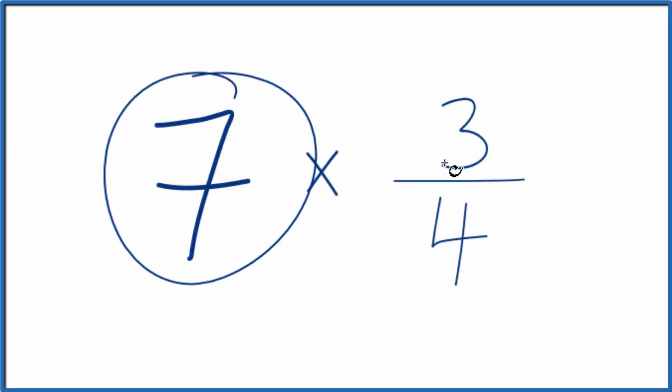Here's how you can multiply 7 times 3 fourths. The first thing you could do is you could just add 3 fourths together 7 times. That would give you 7 times 3 fourths.